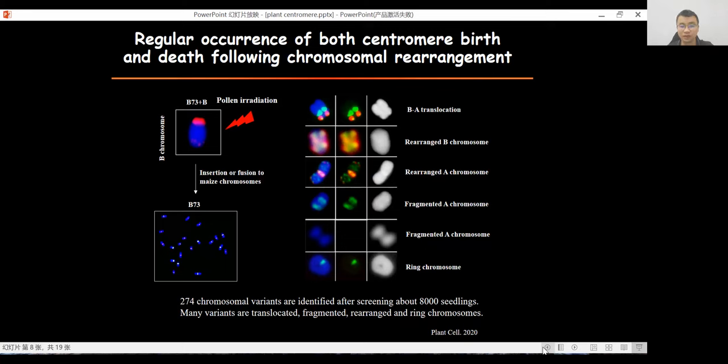Many structural dicentric chromosomes were found with only one single primary constriction, suggesting inactivation of another centromere. For chromosome fragments without canonical centromeric repeat sequences, this revealed the presence of de novo centromere formation. This result illustrates the regular occurrence of both centromere birth and death following chromosome rearrangement. These events occurred during a narrow developmental window with this pollen irradiation system.